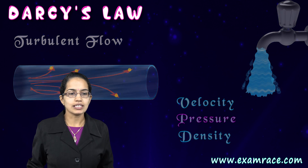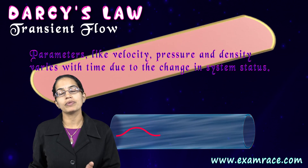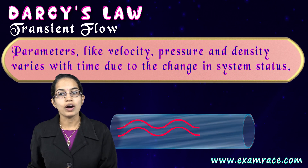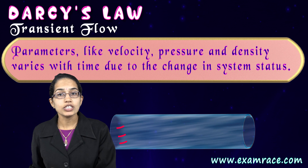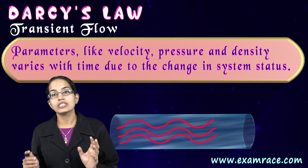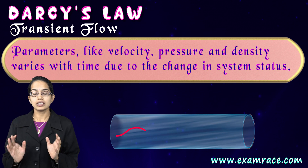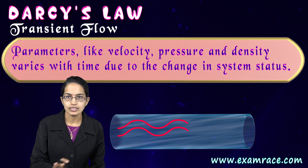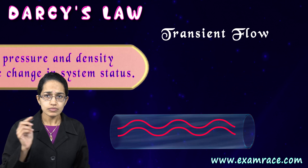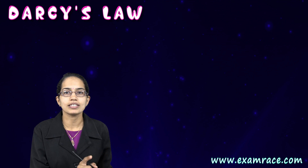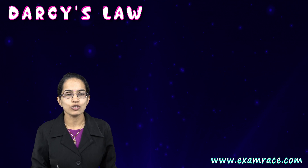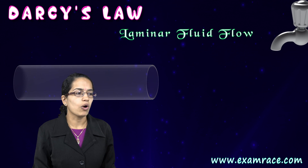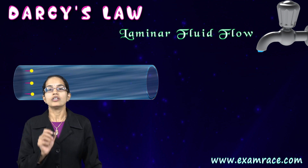The third is transient movement. Transient movement means these properties change with time due to the change in the status of the system, and therefore we call it a transient flow. Whenever we are considering Darcy's law, it's very important that we are focusing on a laminar fluid flow.